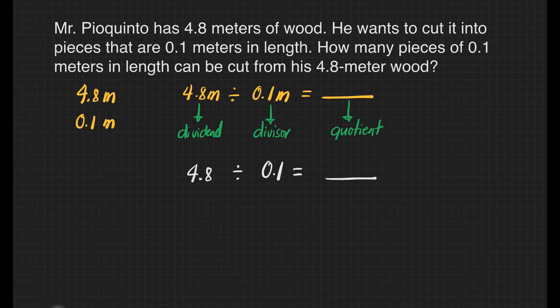In dividing decimals, we have to change our divisor into a whole number. For this case, our divisor is one-tenth meter. We have to move one place to the right to make this a whole number, and that's one.